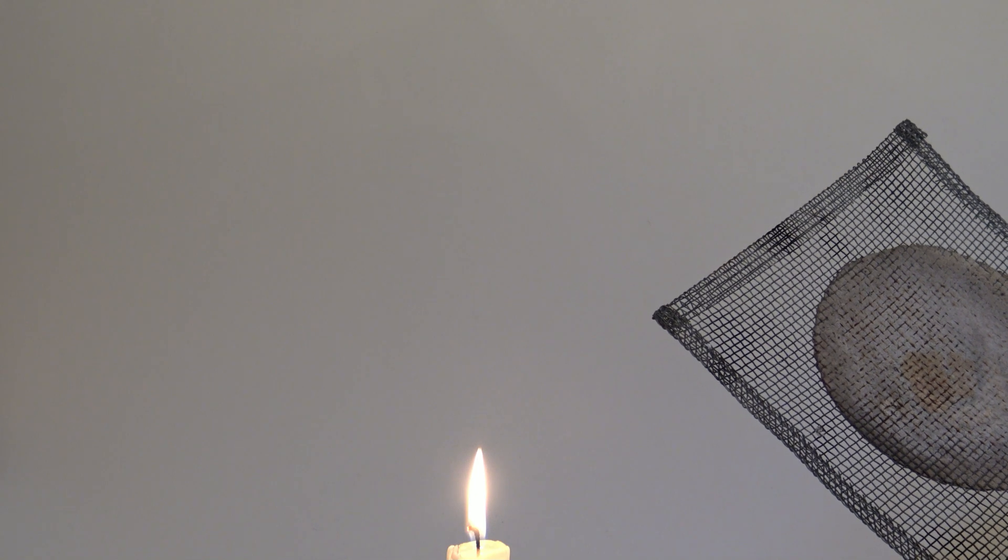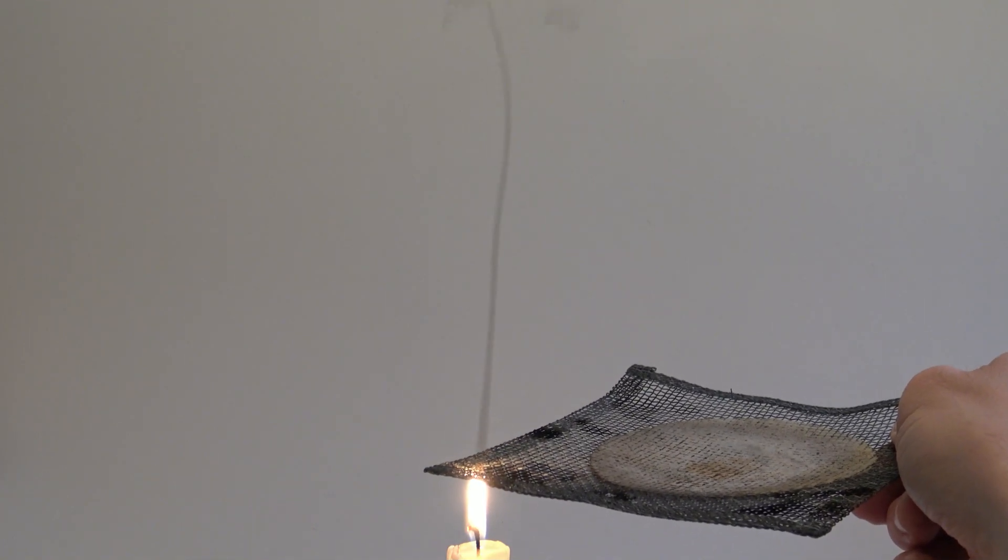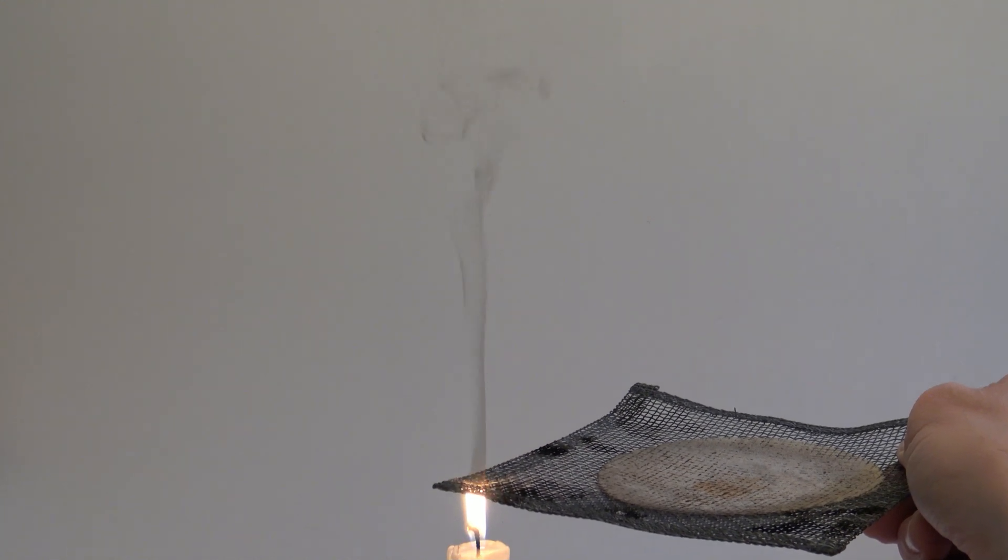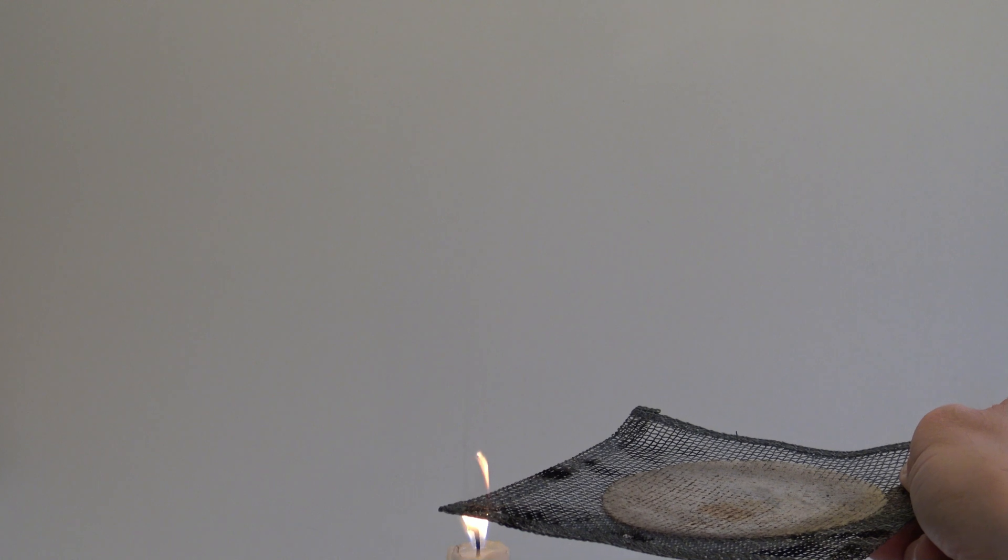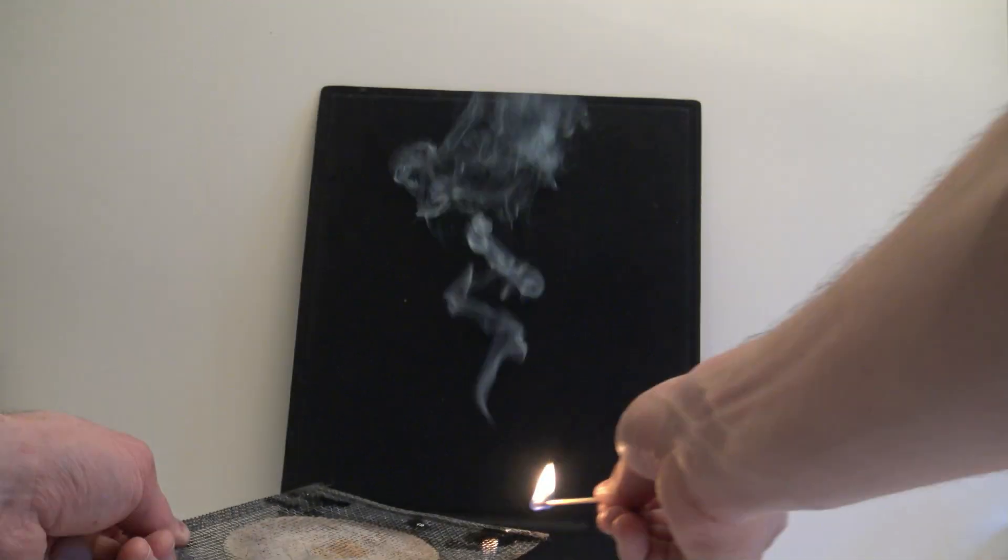To show that soot particles are formed in an incomplete combustion of the wax, a wire gauze can be held into the top of the flame. When it is held lower, the smoke becomes white as it is now wax vapors instead of soot particles. When the wire gauze is held at the right spot, the vapors can even be lit again.